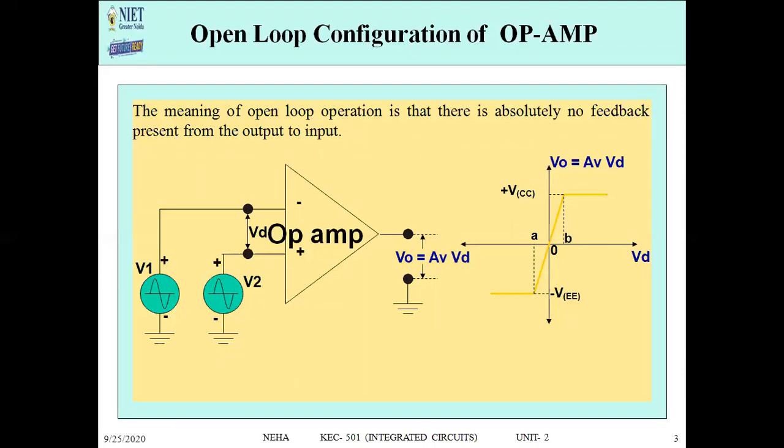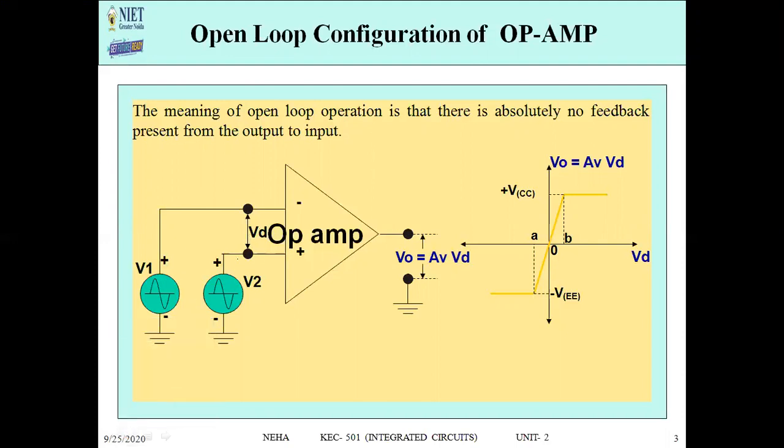The meaning of open loop operation is that there is absolutely no feedback present from output to input. As shown in the diagram, there is no feedback from output to input. The op-amp has two inputs: the inverting input V1 and the non-inverting input V2. The difference between both inputs is VD, which is basically V1 minus V2 — the difference of the two input voltages.